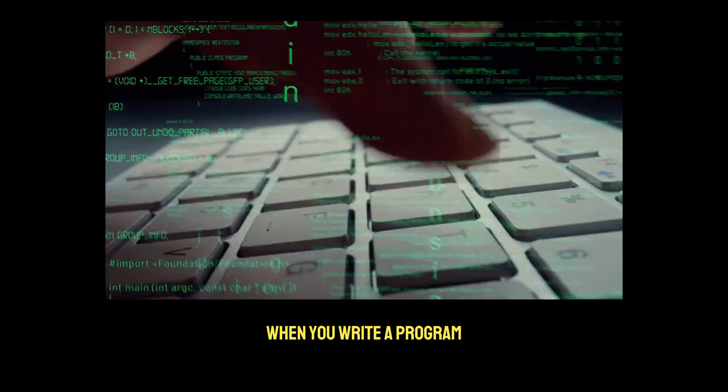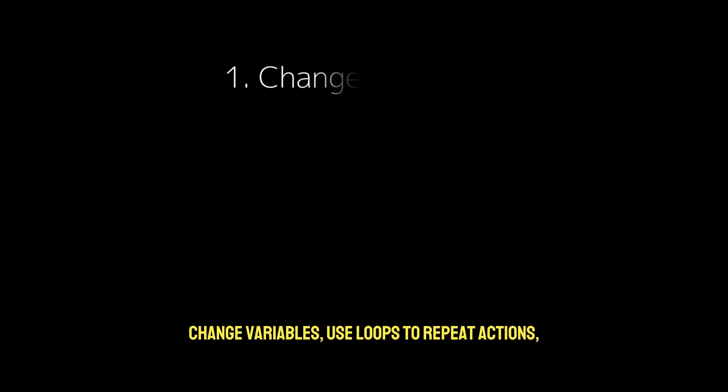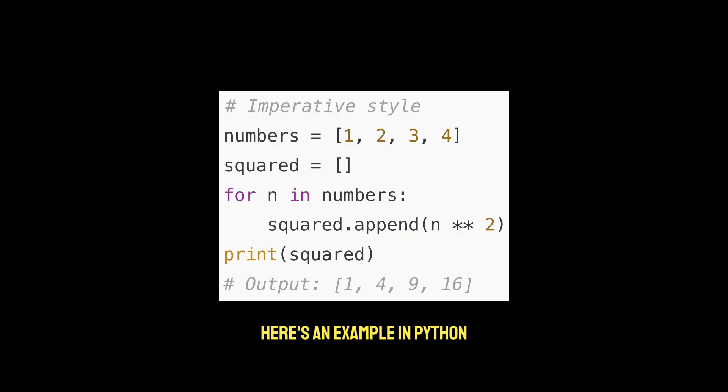Imagine how you normally program. When you write a program, you usually tell the computer what to do step by step. Change variables, use loops to repeat actions, save results somewhere. Here's an example in Python. This is called imperative programming.